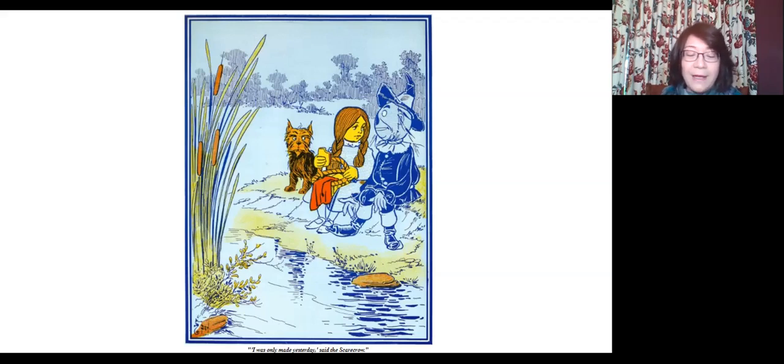After an hour or so, the light faded away, and they found themselves stumbling along in the darkness. Dorothy could not see at all, but Toto could, for some dogs can see very well in the dark. The scarecrow declared he could see as well as by day, so she took hold of his arm and managed to get along fairly well.